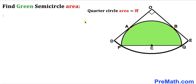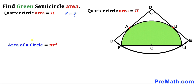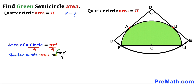Let's get started. The quarter circle area is π, and we are going to calculate the radius R of this quarter circle. Recalling the area of a circle formula: Area = πr². Since we are dealing with a quarter circle, we divide by 4, giving quarter circle area = πr²/4. Equating this with π gives us πr²/4 = π.